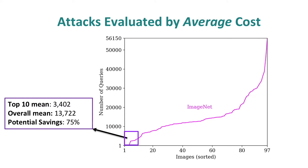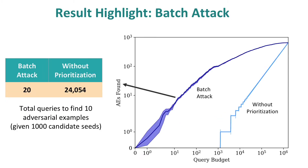So can we identify the low cost images in advance? The answer is again yes. We propose a batch attack strategy to find low cost images. Compared to the strategy without any prioritization, our batch attack strategy can easily identify low cost images. So we can find more adversarial examples with the same query budget, or find the same number of adversarial examples with much less query cost.